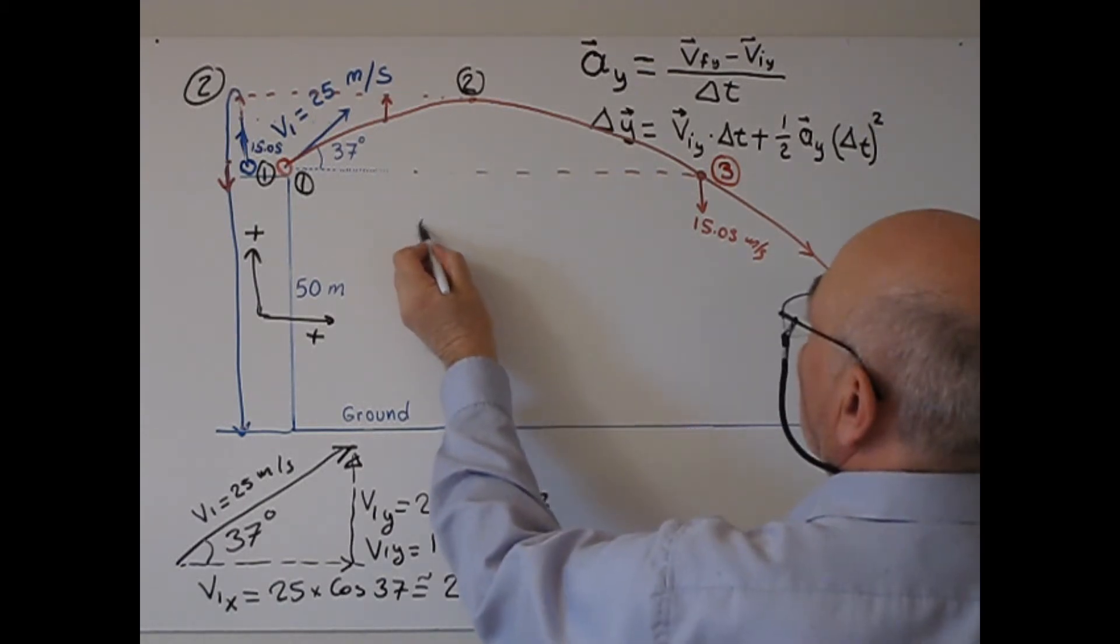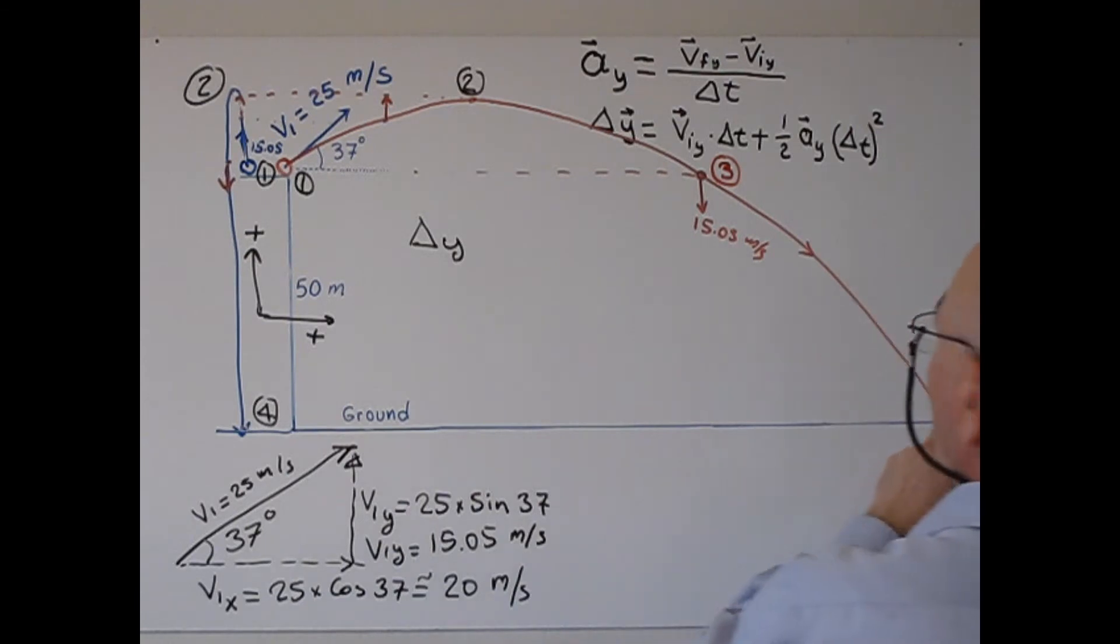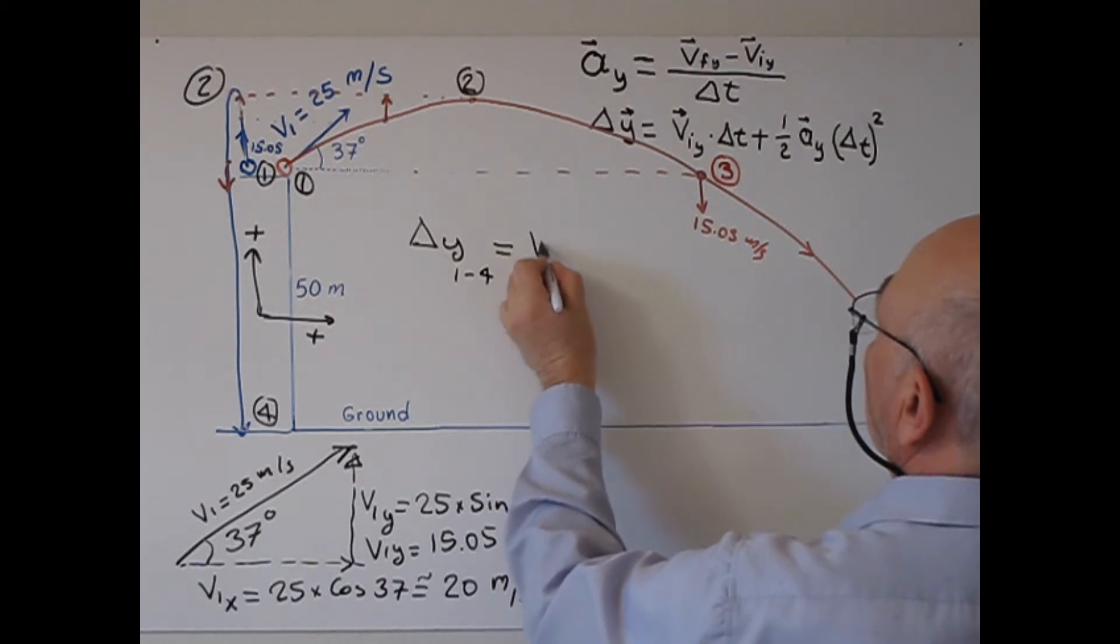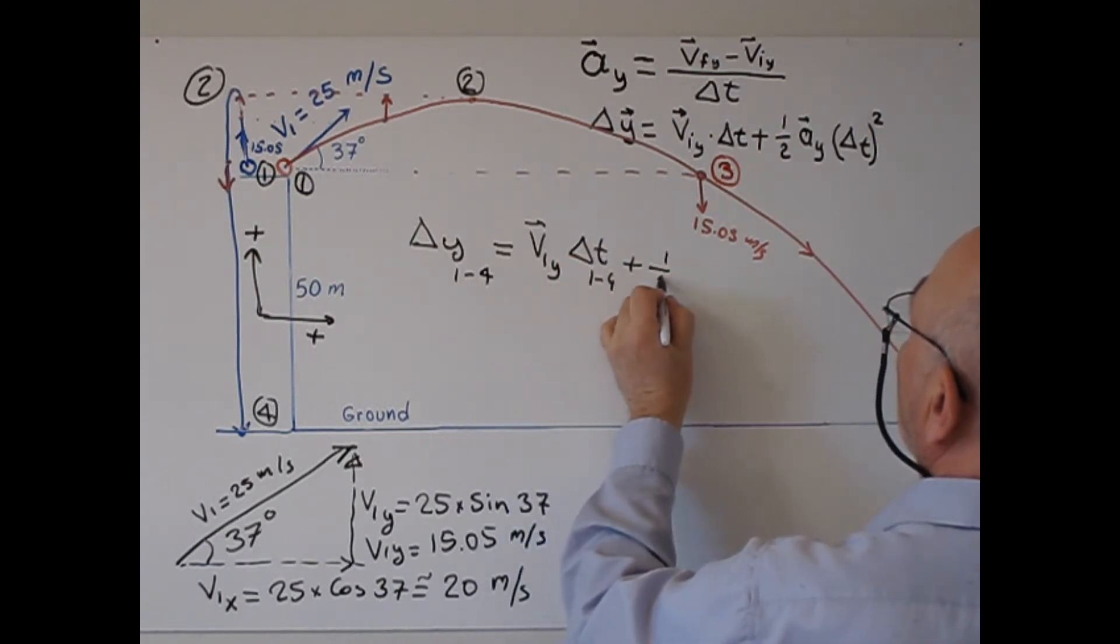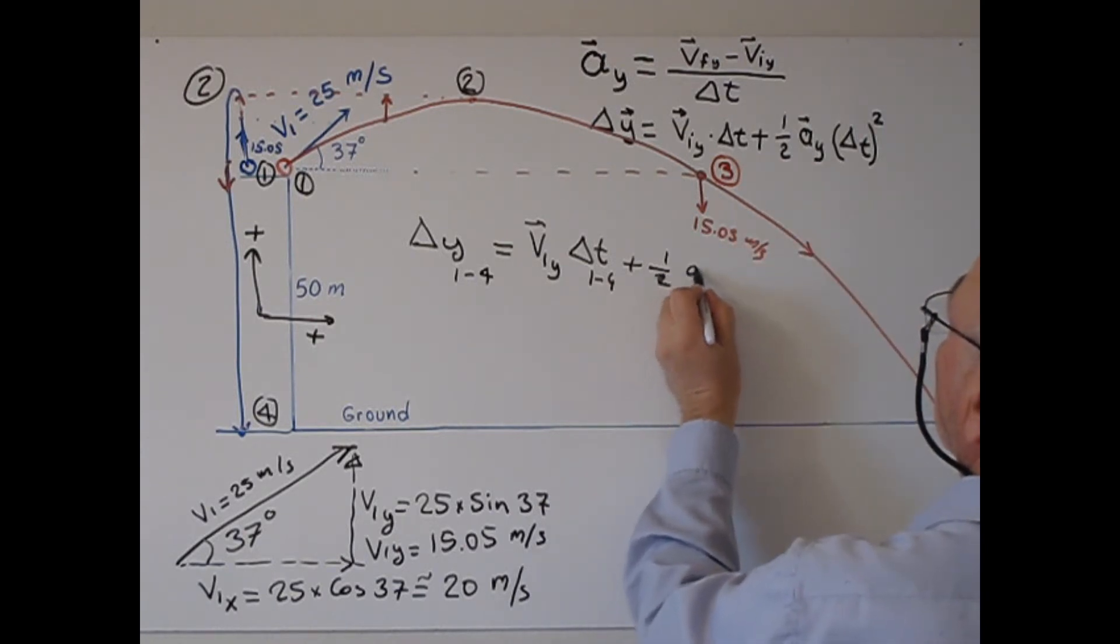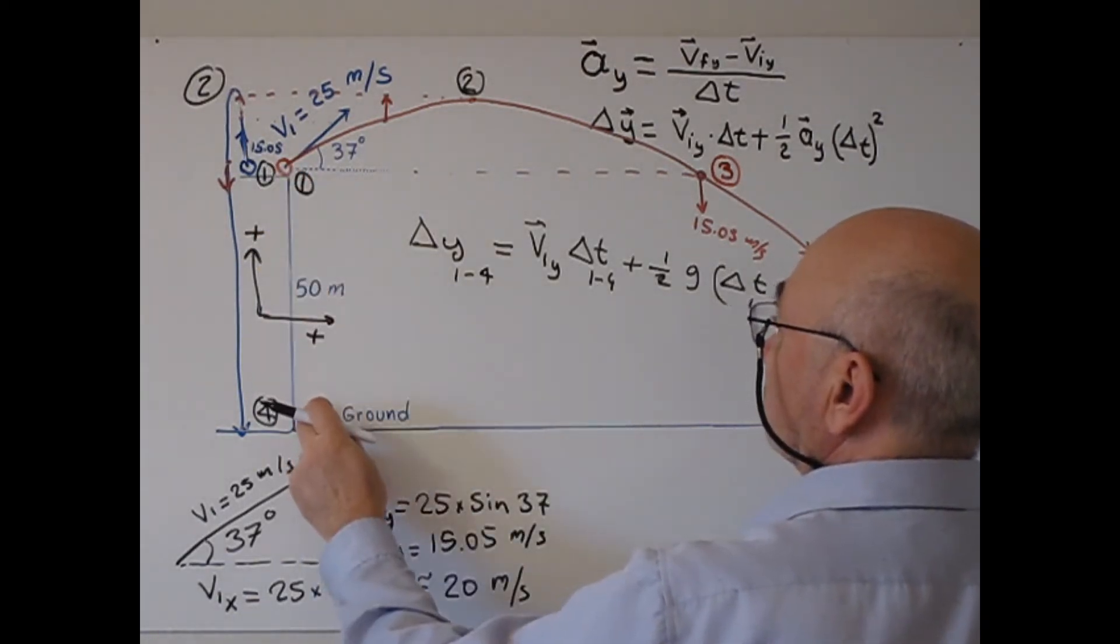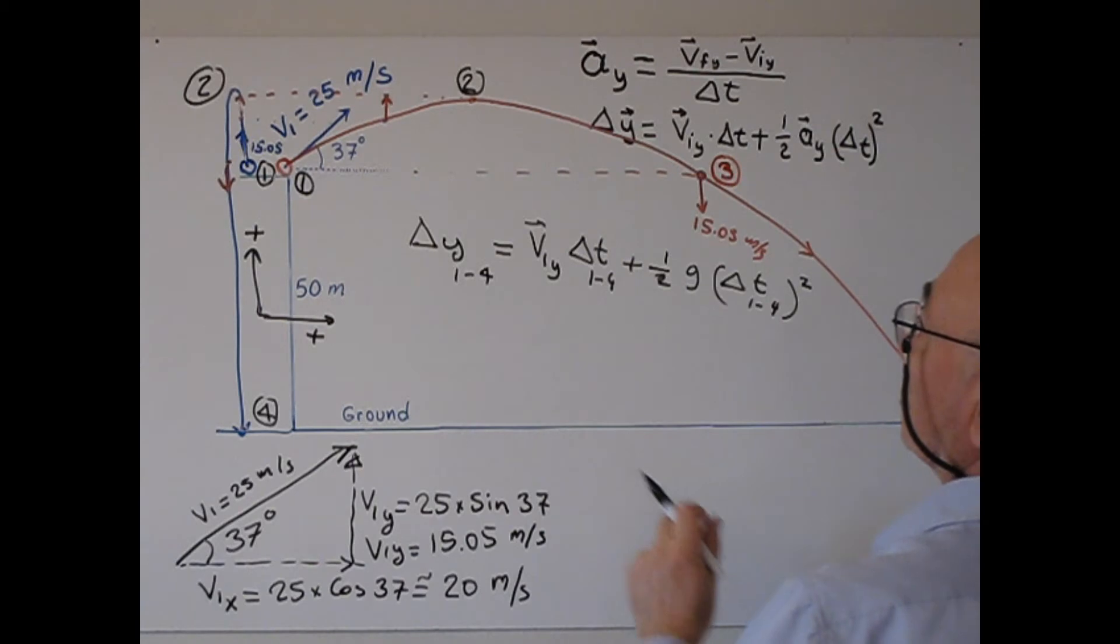Delta y between point 1 and point 4 equals v1y times delta t14 plus one-half g times delta t14 squared. Delta y from here to here, so this displacement will be negative 50 meters.